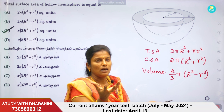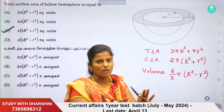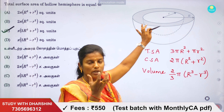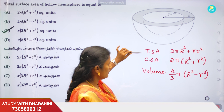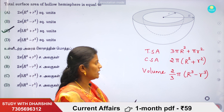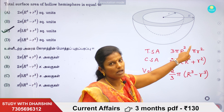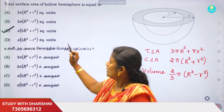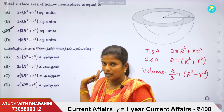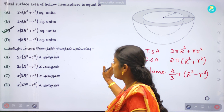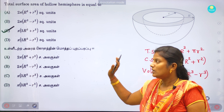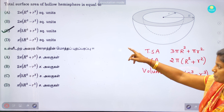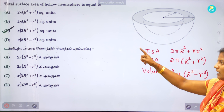In this formula, the outer radius is used with R² terms. The total surface area formula involves 3πR² plus πr². If you look at the options, you have 3R² plus r², and you can identify the third option.